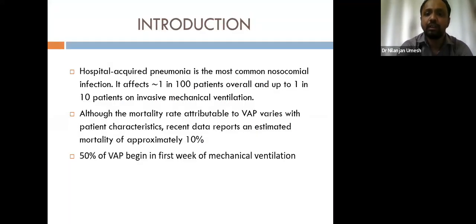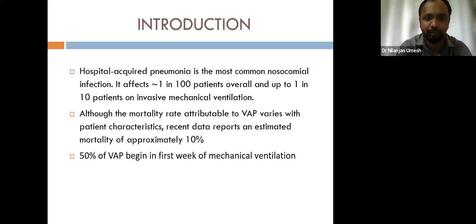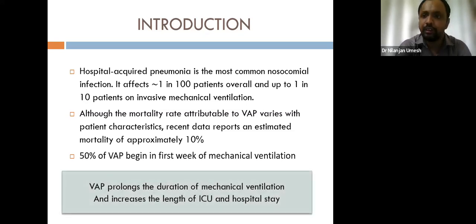Hospital-acquired pneumonia is the most common nosocomial infection. It affects almost 1 in 100 patients overall and up to 1 in 10 patients on invasive mechanical ventilation. Although mortality attributable to it varies with patient characteristics, recent data reports an estimated mortality of approximately 10 percent. 50 percent of VAP begins in the first week of mechanical ventilation.